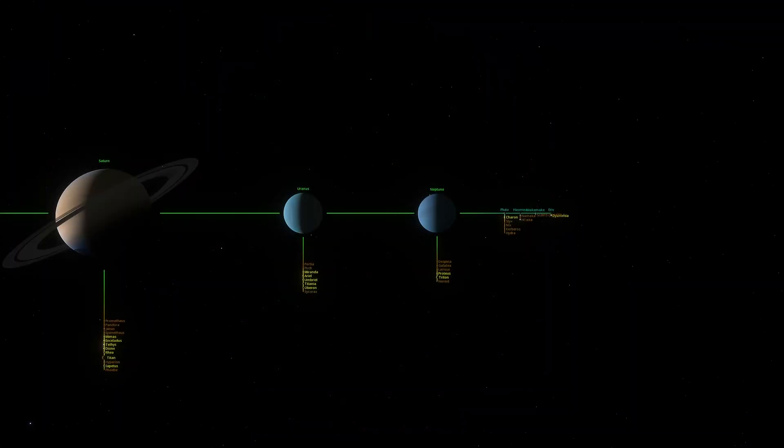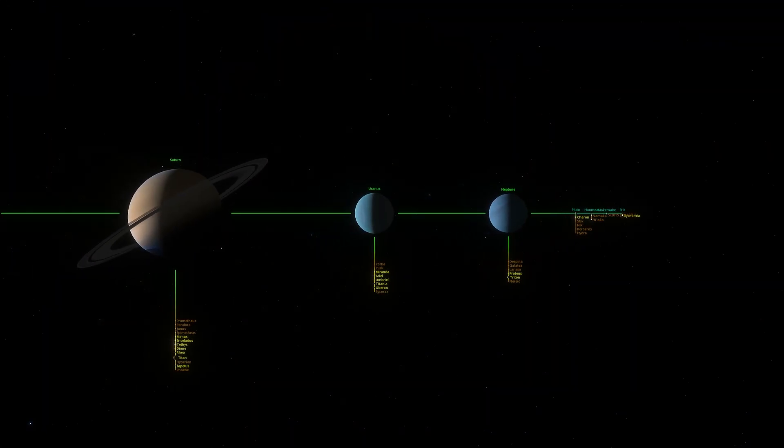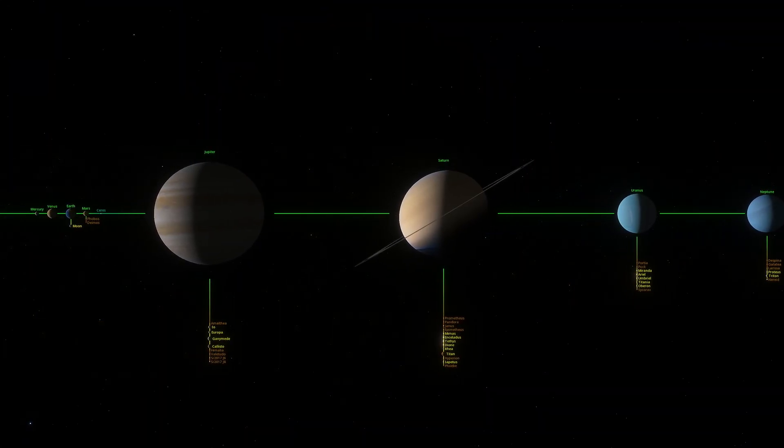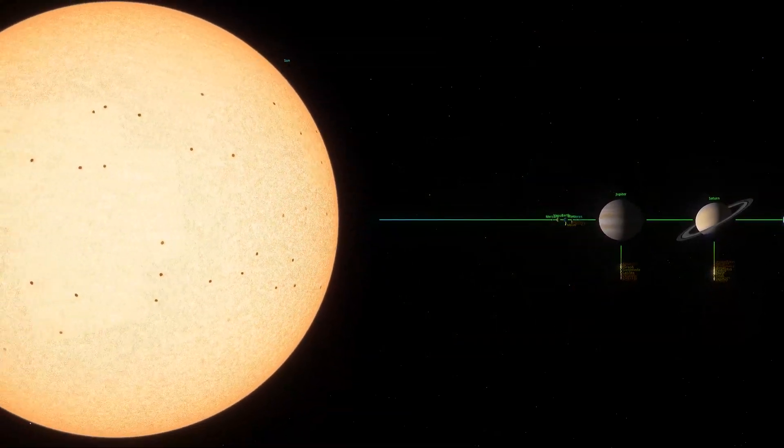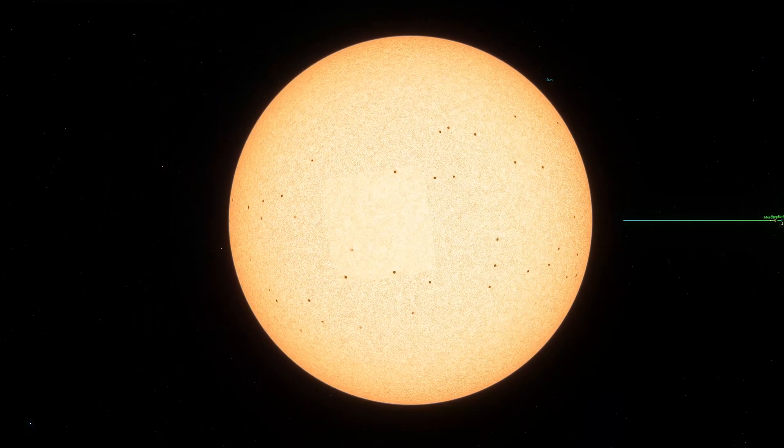Consider the fact that in our solar system, 99.9% of all the mass, that's all the planets, all the stars, all the asteroids, all the dust. 99.9% of it is in the sun.